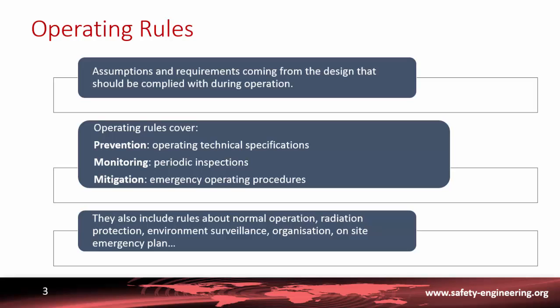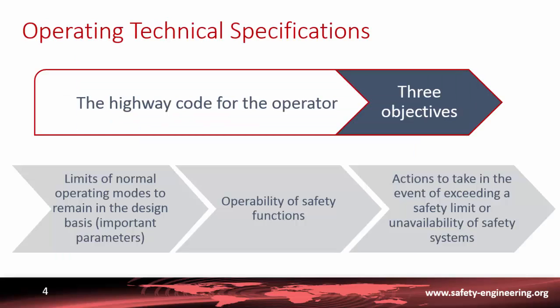The Operating Technical Specifications are the highway codes for the operator, with three main objectives. The first is to ensure that the plant operates inside the design basis and that the important parameters are kept under control.